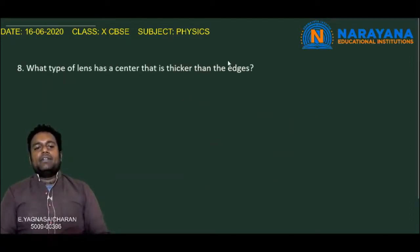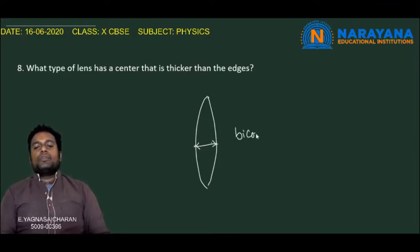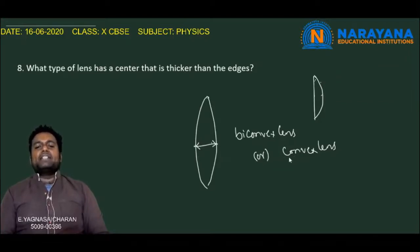The eighth question: What type of lens has a centre that is thicker than the edges? A lens that is thick at the centre compared to the edges — where the edges are thin — is named a biconvex lens or convex lens. Even in the case of a plano-convex lens, the thickness at the centre is high compared to the edges. So either a convex lens or biconvex lens will have a thick centre and thin edges.